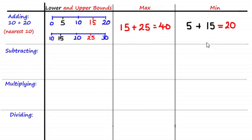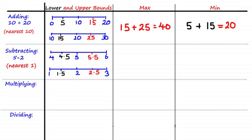Now let's look at max and min values when we subtract rounded values. Assuming we're asked to find the maximum and minimum of 5 minus 2, where each value was rounded to the nearest unit, we again find the upper and lower bounds of each number. The upper bound of 5 is 5.5 and the lower bound is 4.5. The upper bound of 2 is 2.5 and the lower bound is 1.5.